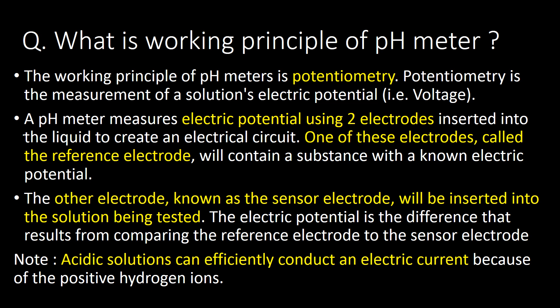A pH meter measures electric potential between two electrodes that are inserted into the liquid to create an electrical circuit. One of these electrodes, called the reference electrode, contains a substance with a known electric potential. The other electrode, known as the sensor electrode, is inserted into the solution being tested. The electric potential is the difference that results from comparing the reference electrode to the sensor electrode.